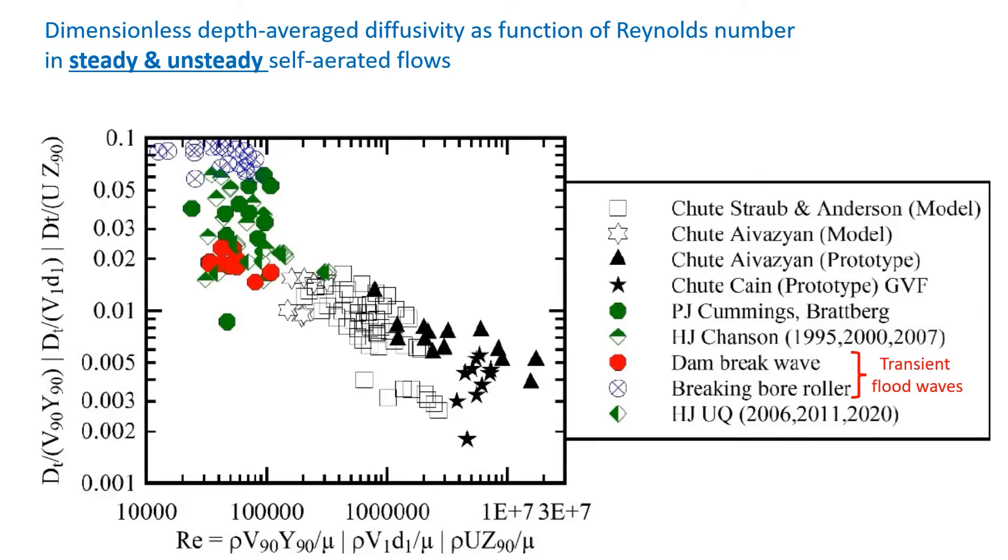We can also compare this dimensionless depth average diffusivity with other air-water flows. The results shown here as a function of the Reynolds number on the x-axis. The transient data sets are in red and blue, and the other data sets include some self-aerated chutes, plunging jets, and hydraulic jumps.